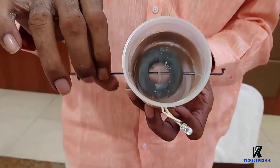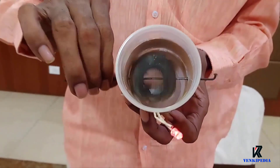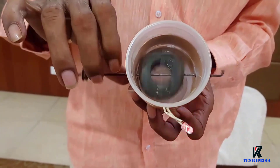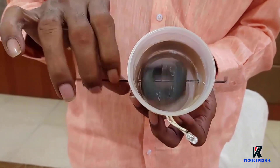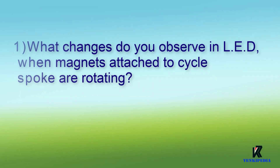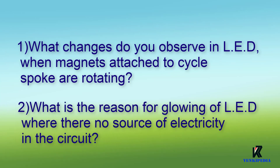After observing this video, try to predict the reasons for your observations and answer the following questions. What changes do you observe in the LED when magnets attached to the cycle spoke are rotating? What is the reason for glowing of the LED where there is no source of electricity in the circuit?